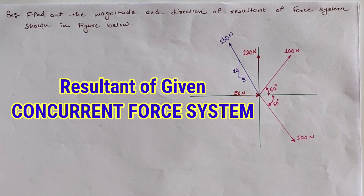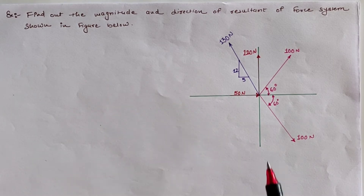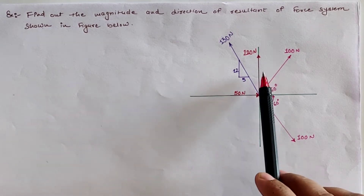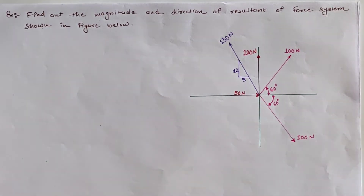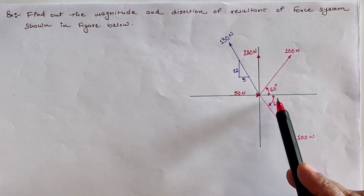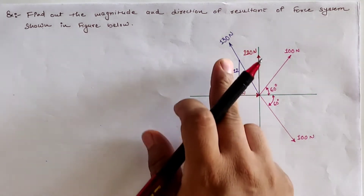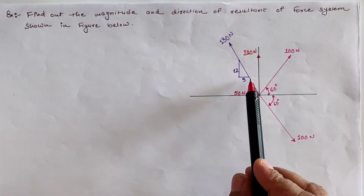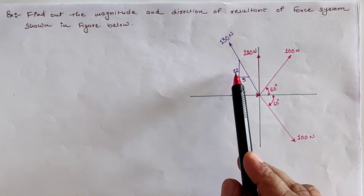Hello friends, today we are going to analyze a given force system in which we have five loads as shown in the figure. Observing the figure: the 50 newton load is horizontal, the 120 newton load is upward (vertical), and two 100 newton loads are acting at 60 degrees with the horizontal axis, while the 130 newton load has a slope of 5 horizontal units and 12 vertical units.